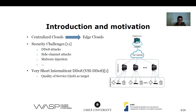VSI DDoS, or Very Short Intermittent DDoS, is a new type of DDoS attack that targets the quality of service of the deployed services on the Edge. In this work, we consider the VSI DDoS detection problem as the main problem.